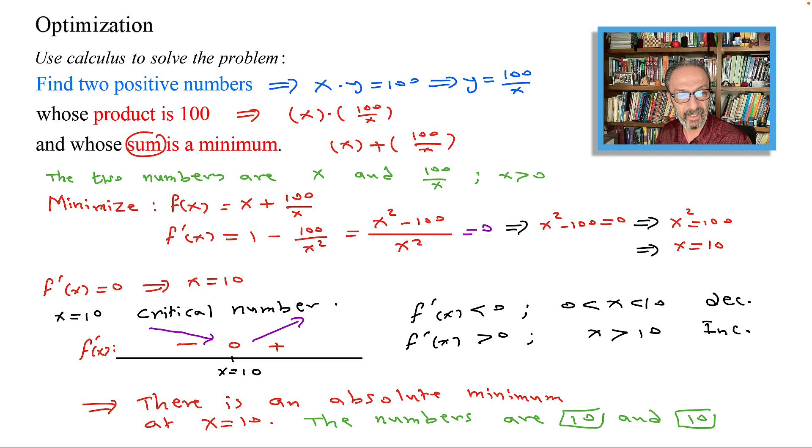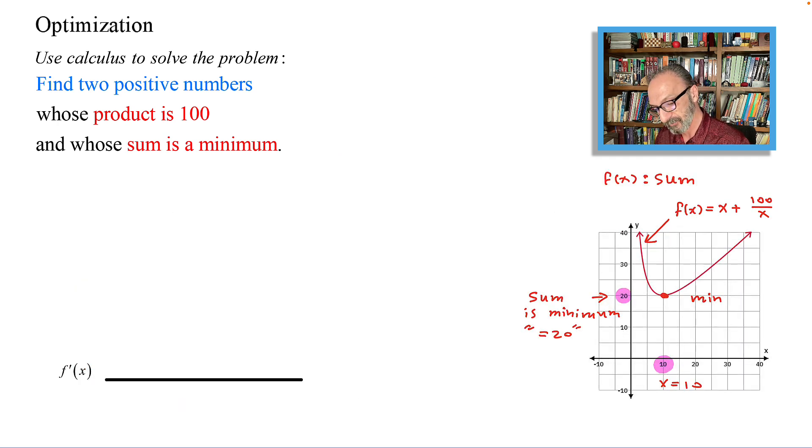To support the answer graphically, here's what I have. We have the graph of the function f of x equals x plus 100 over x graphed, and it shows that we have a minimum when x equals 10. And the function f of x represents the sum, and the sum will be at that time the lowest, which is 20. So when x equals 10, y equals 100 over 10, which is another 10, so the numbers are 10 and 10. And as I mentioned earlier, at x equals 10, the graph was decreasing then increasing. That's the only critical point that we have at x equals 10, and that will give us an absolute minimum.